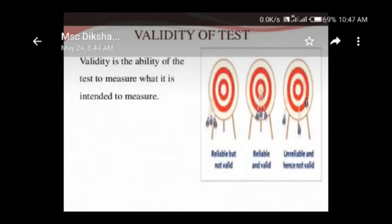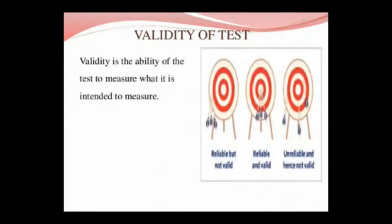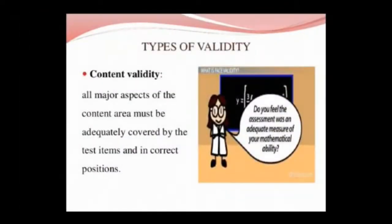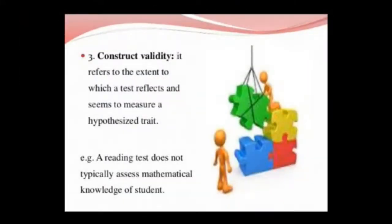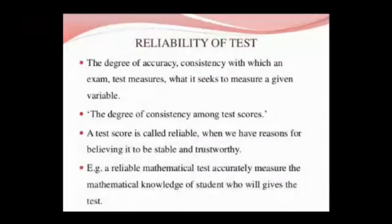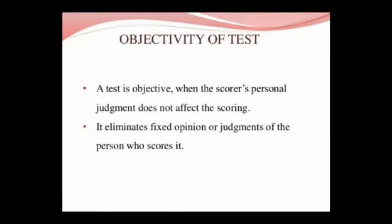Validity is the ability of a test to measure what it is intended to measure. Types of validity include content validity, predictive validity, construct validity, concurrent validity, and face validity. Reliability is the degree of accuracy and consistency with which an exam measures a given variable — the degree of consistency among test scores.